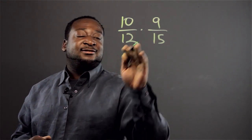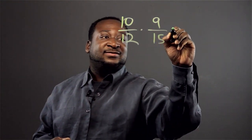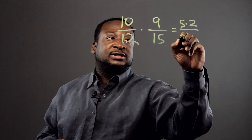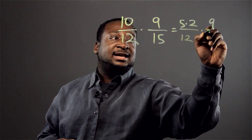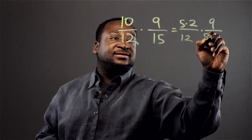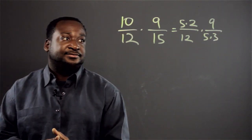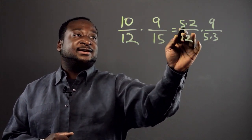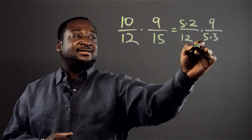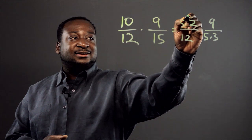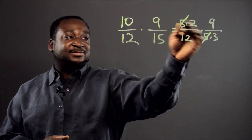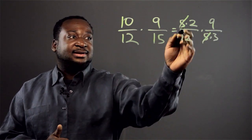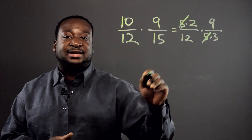Another way to write this is equivalent to 5 times 2 over 12, times 9 over 5 times 3. We see that we have a 5 in the numerator and a 5 in the denominator, so we can cross these out — we're simplifying by crossing them out, because 5 divided by 5 is equivalent to 1.